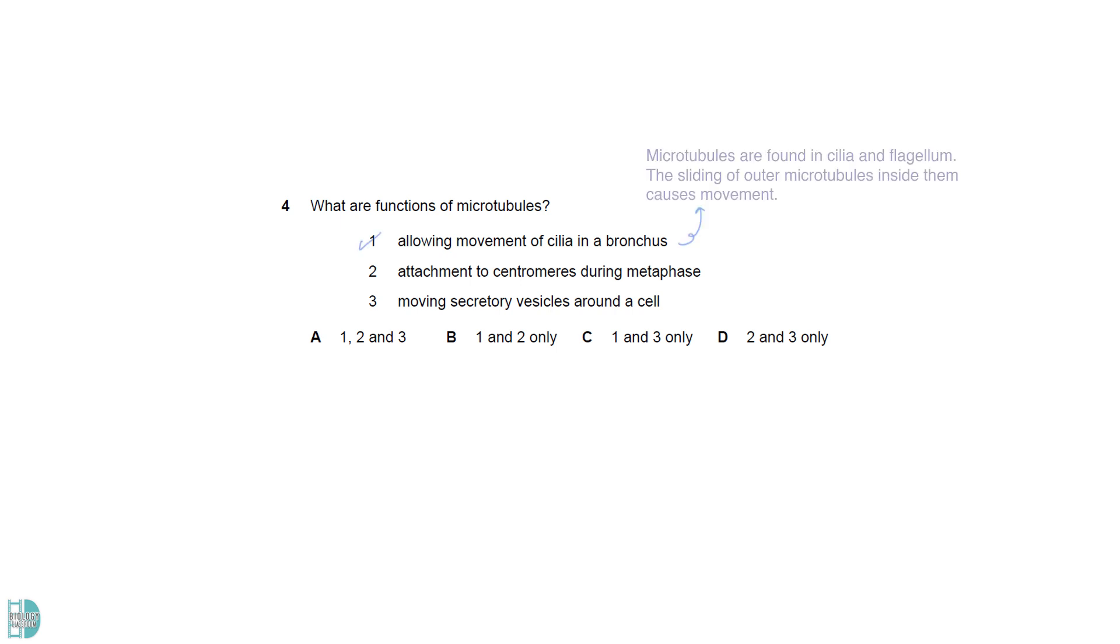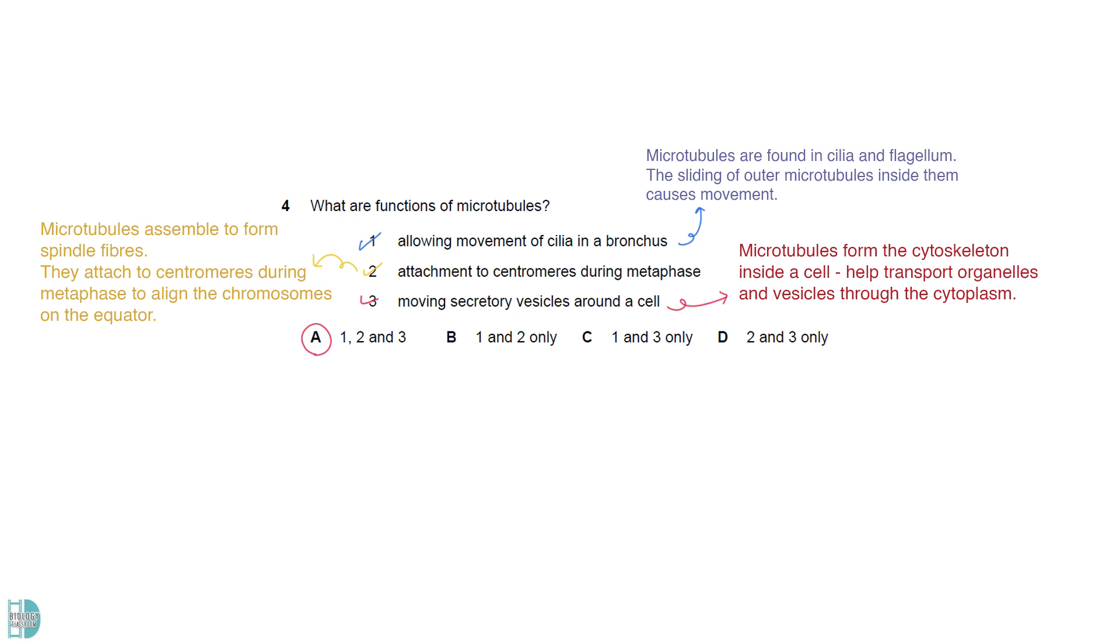Microtubules are found in cilia and flagellum. The sliding of outer microtubules inside these structures leads to the movement. Microtubules are assembled to form spindle fibers, so it is true that they attach to centromeres during metaphase to align the chromosomes on the equator. They form the cytoskeleton inside a cell and help transport organelles and vesicles through the cytoplasm.